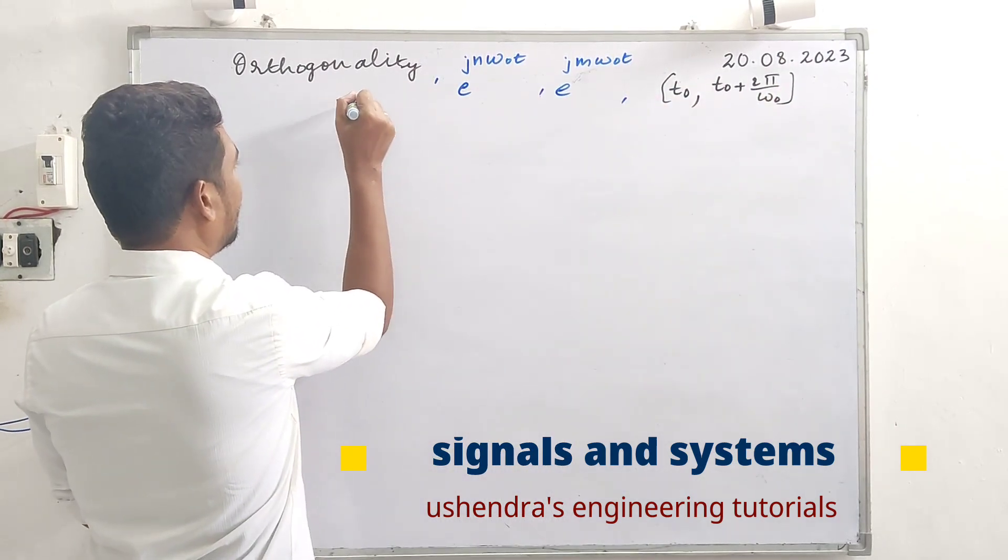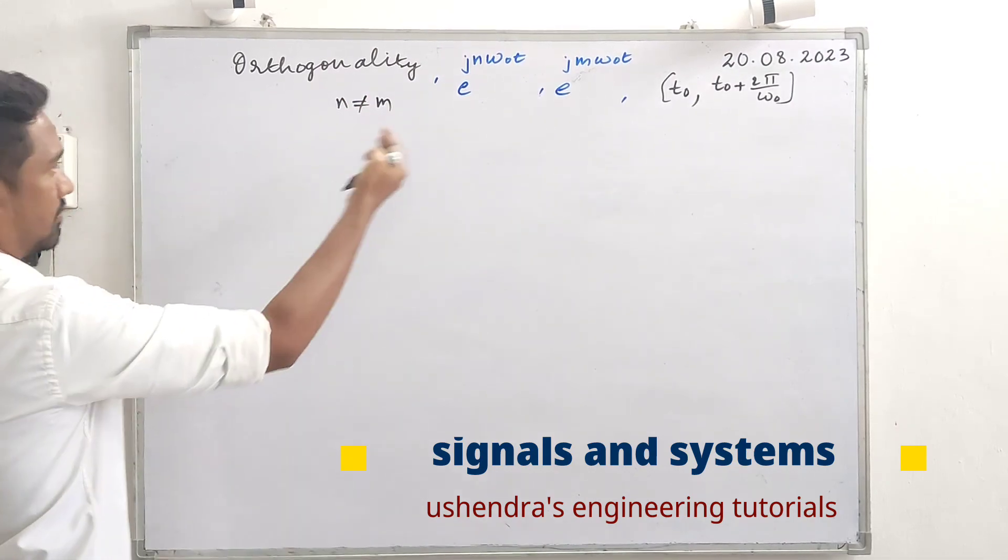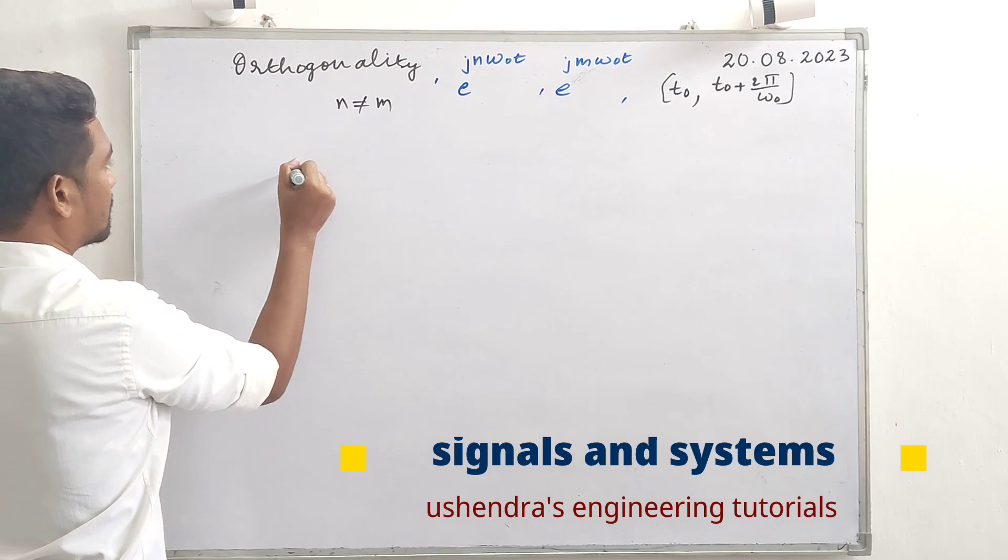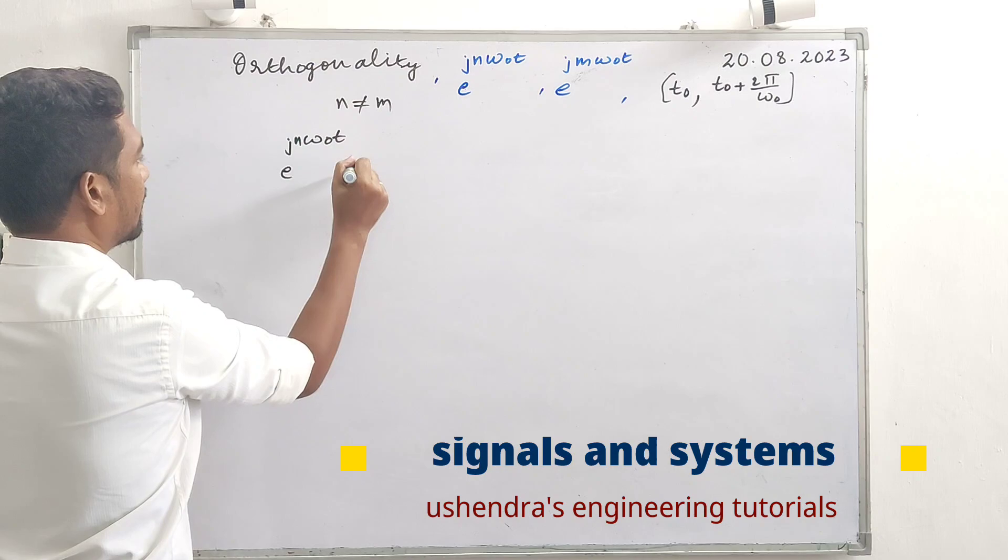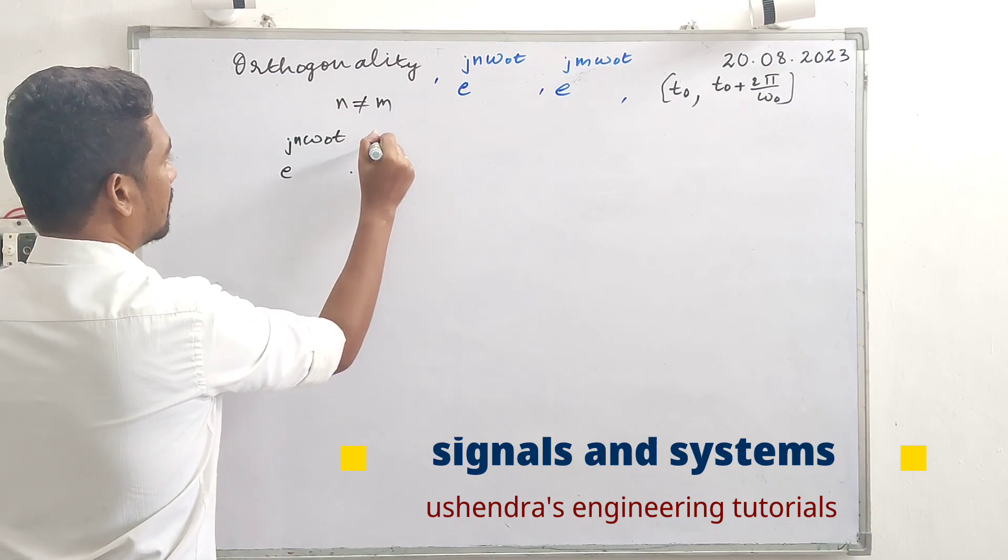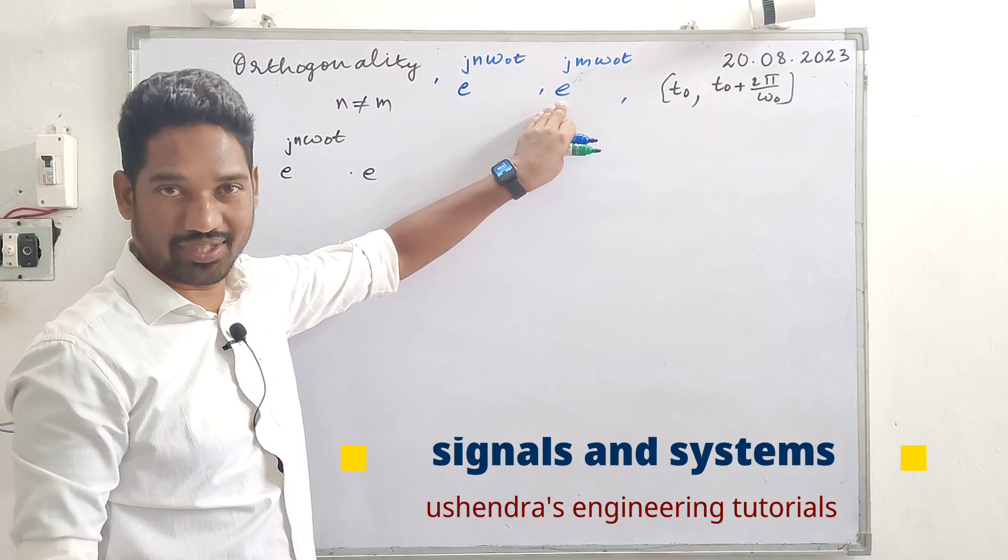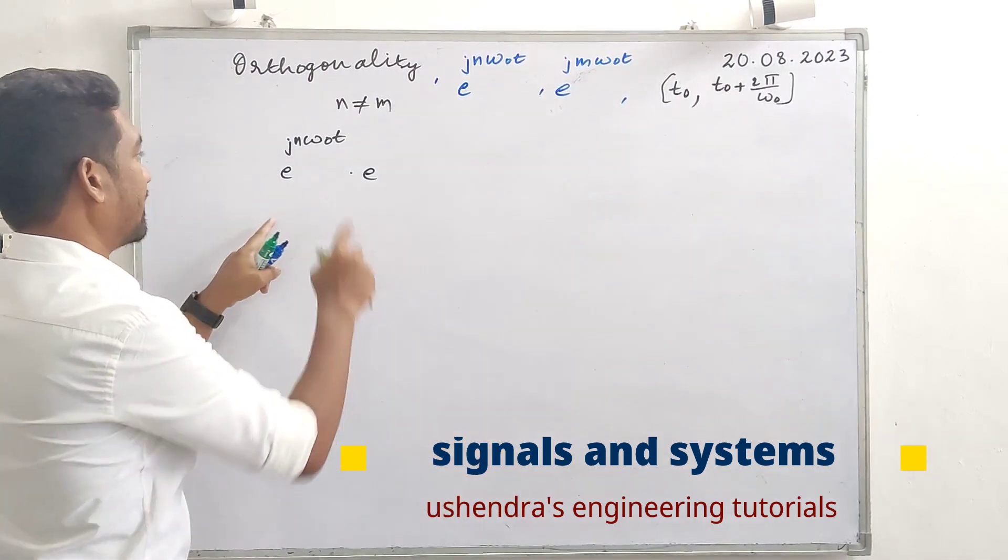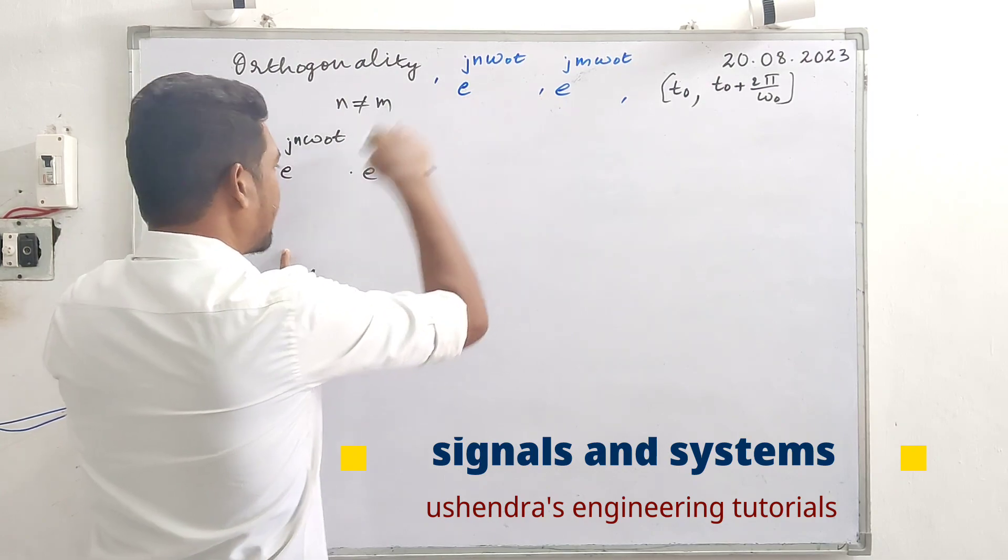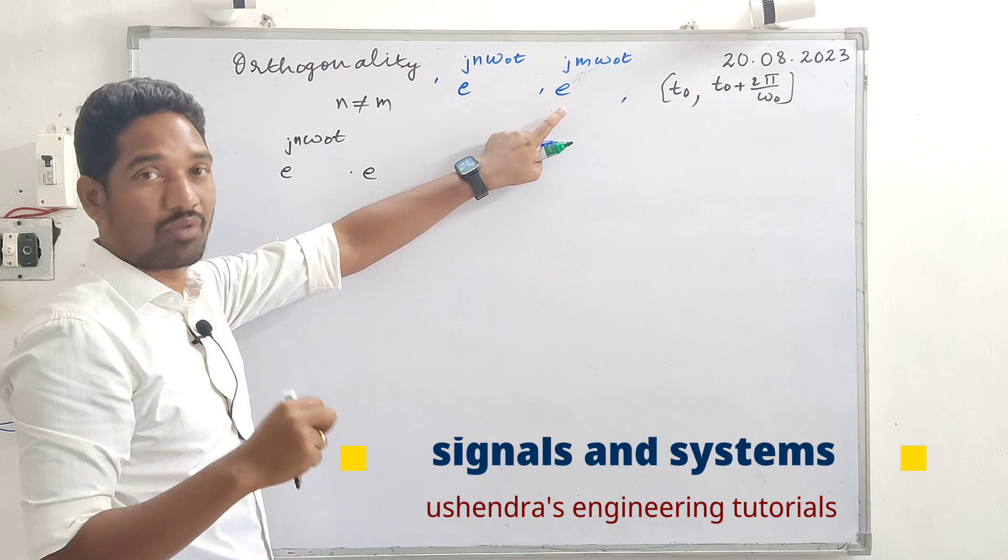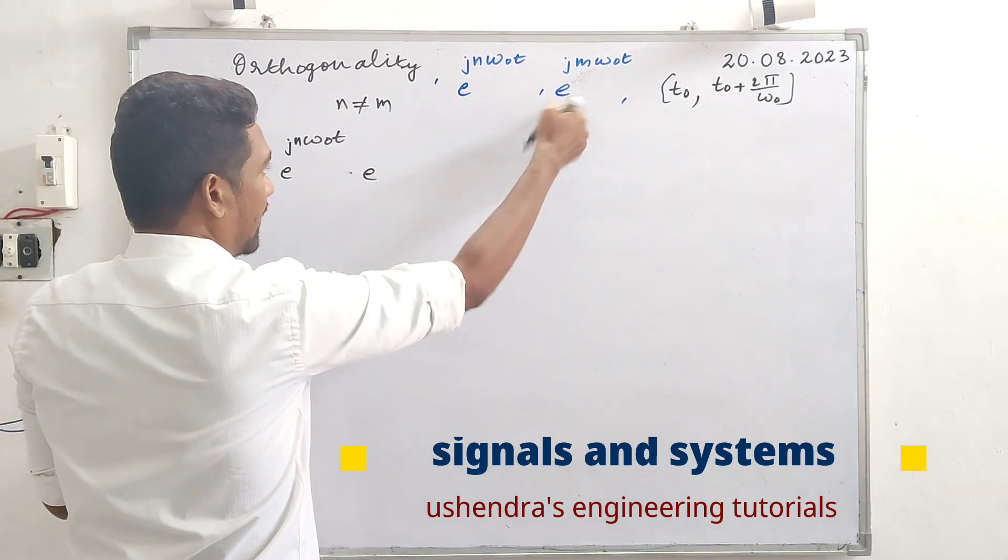So the inner product: e raise to jn omega naught t into e raise to jm omega naught t. These are complex exponential functions. Straightaway we check the product. We have a rule: complex conjugate is taken, so we take the complex conjugate minus jm omega naught t and then the product is integrated.